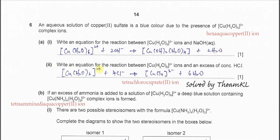Part two: write an equation for the reaction between the hexa aqua copper(II) ion and excess concentrated HCl. It will form a tetrahedral complex ion called tetrachlorocuprate(II). All the chloride ions will substitute the H₂O ligands in the complex ion to form this new complex ion. All six H₂O molecules will be substituted.